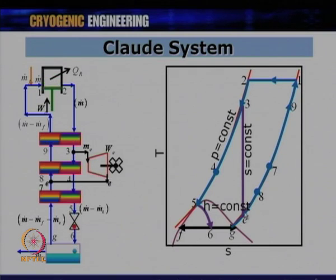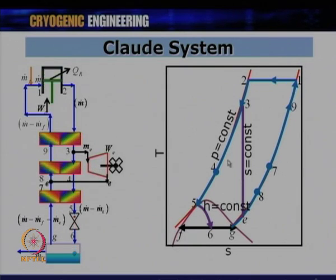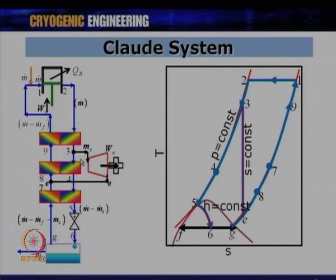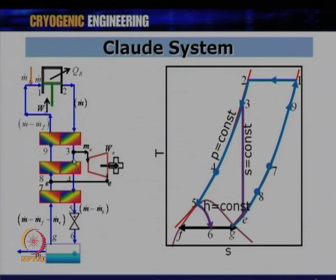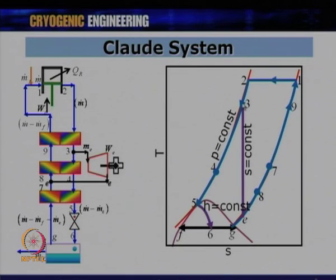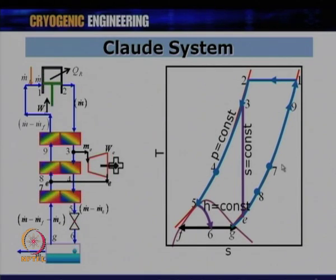On the T-S diagram, the gas is taken from the high-pressure line at point 3 and expanded isentropically to point E, shown as a vertical line. To locate point E, draw a vertical line from point 3 on the high-pressure isobar down to the low-pressure return line — wherever it intersects gives point E. The gas then expands from point 3 and joins the return stream at point E.